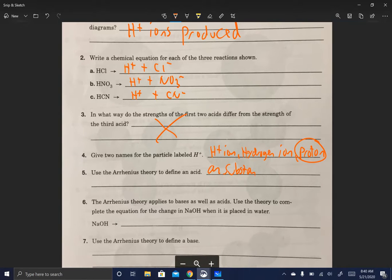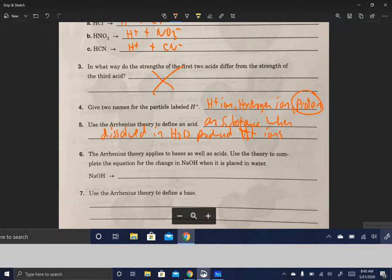Arrhenius theory to define an acid: any substance when dissolved in H2O produces H plus ions. This dissociates Na plus plus OH minus, that's the dissociation, and that makes it a base. A base is the same as this: any substance when dissolved in water produces OH minus. So the difference here: OH ions produced. So any compound, any substance in water that produces OH minus ions, that's a base.